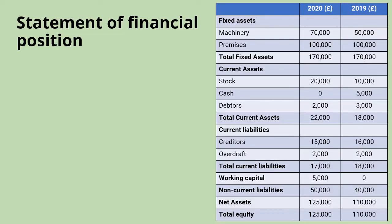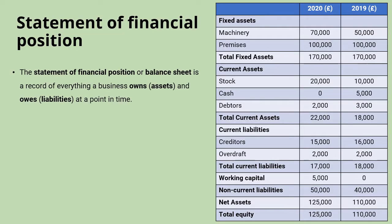The statement of financial position, or balance sheet, is a record of everything a business owns — its assets — and everything it owes — its liabilities — at a particular point in time.